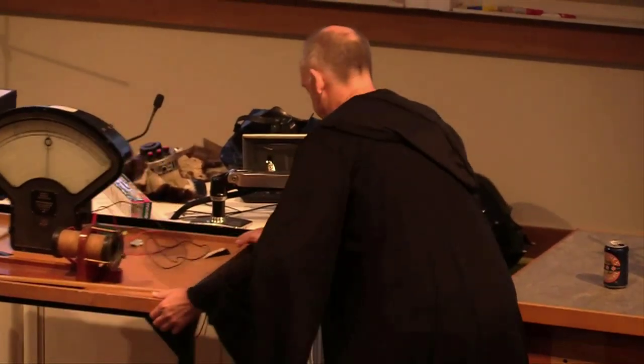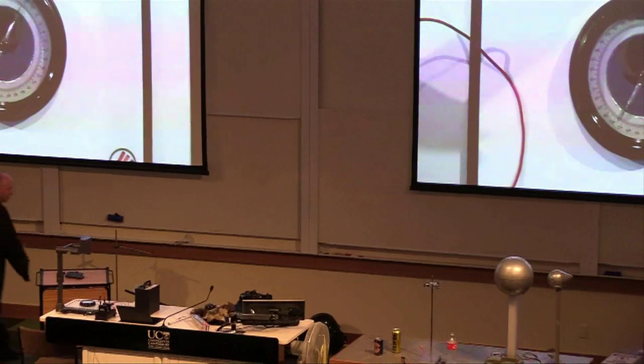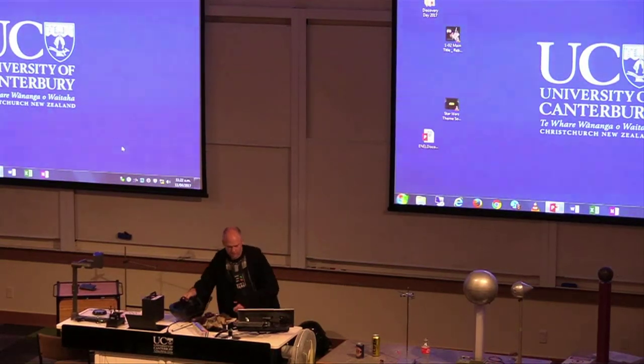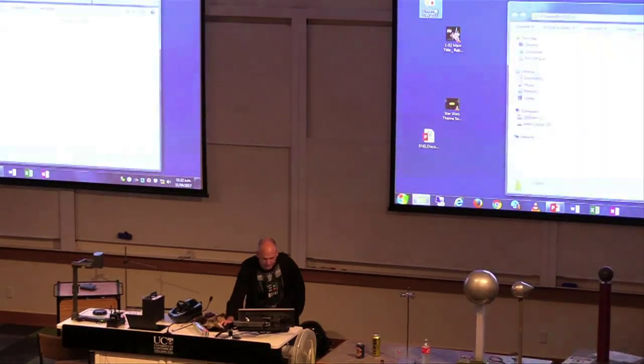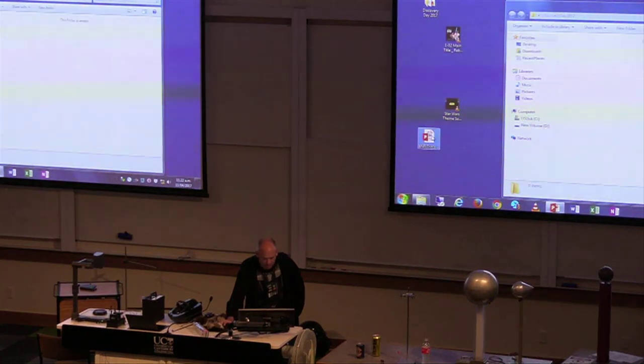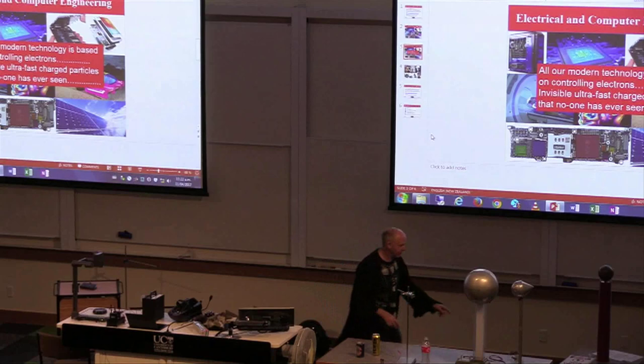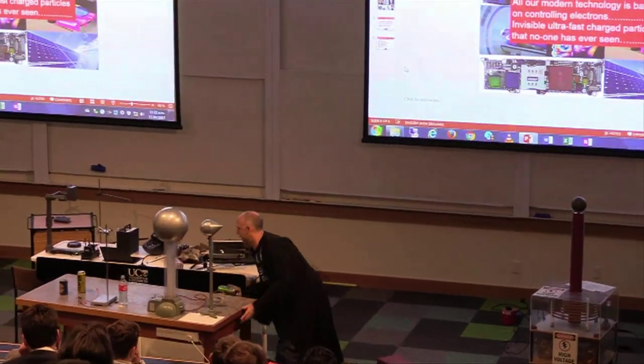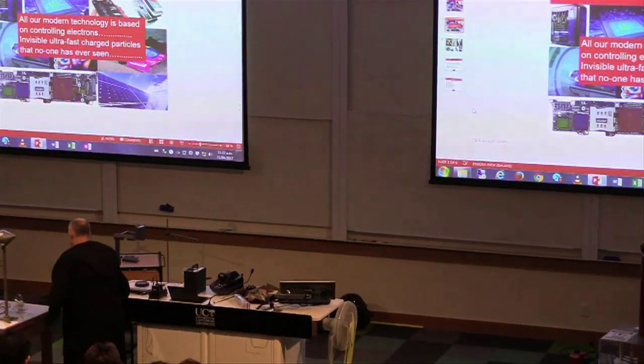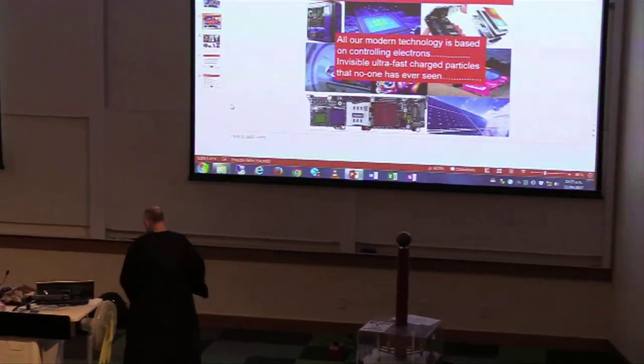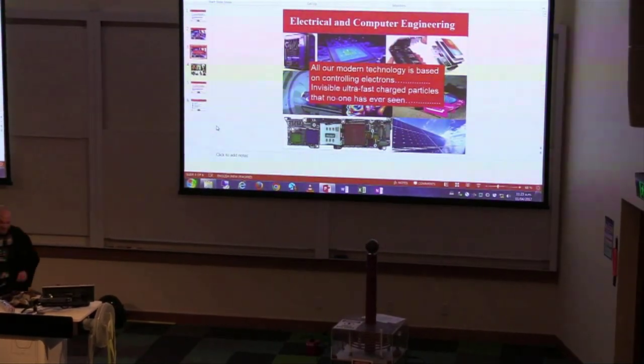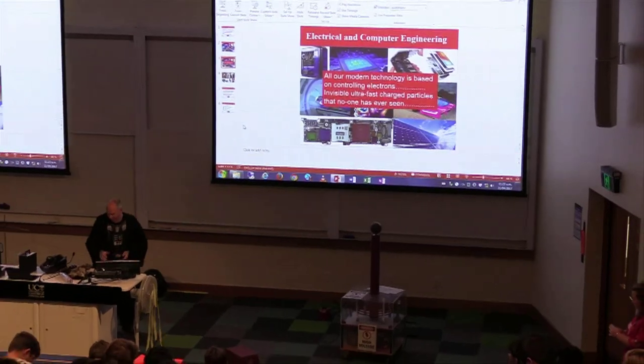Once you've generated your electricity, your next problem is getting it to where you want it. And the guy that did that for us was a man called Nikola Tesla and he's responsible for this instrument here called a Tesla coil. If you're in the front few rows, I recommend just turn your cell phones off. In fact, if anyone's got one worth more than $500, I'd turn them off anyway.